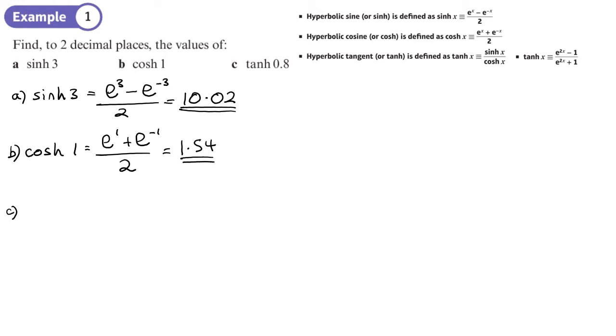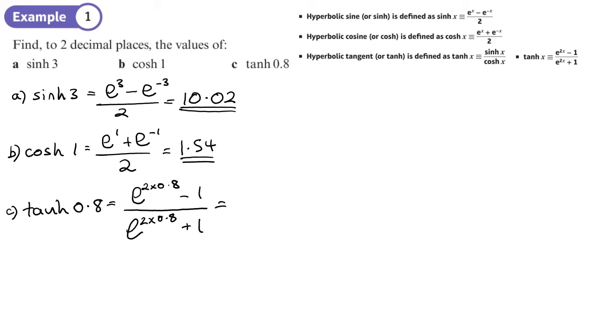For tanh(0.8), using the formula: e to the 2 times 0.8 minus 1, over e to the 2 times 0.8 plus 1 — that's e to the 1.6 minus 1, over e to the 1.6 plus 1. Entering that into the calculator gives 0.664, so 0.66 to two decimal places. These can all be done using your calculator, and even old calculators had a hyperbolic function.